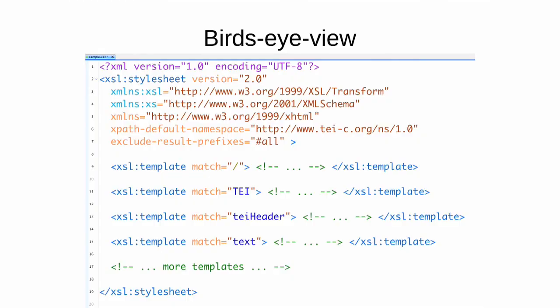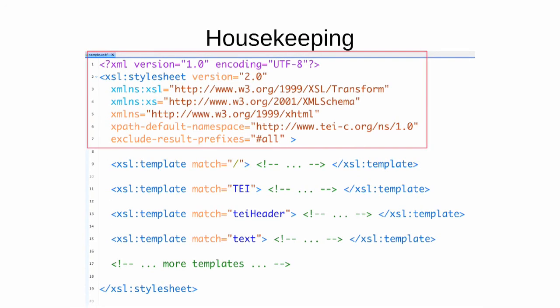Here's a bird's eye view, an overview of an XSLT stylesheet. You'll notice at the top there's some potentially scary-looking stuff — we'll go over that in more detail later. What I want to focus on now is the main part of the stylesheet, which is a series of xsl:template elements. It doesn't matter what order these templates are in, and there's nothing else in the stylesheet except the series of xsl:templates.